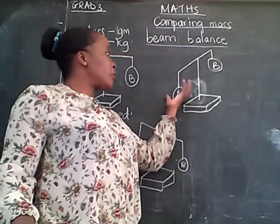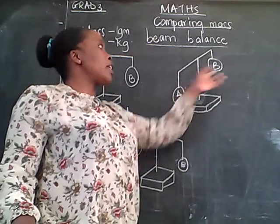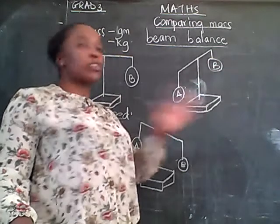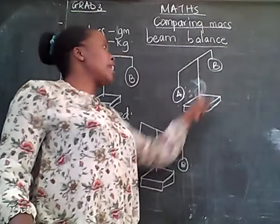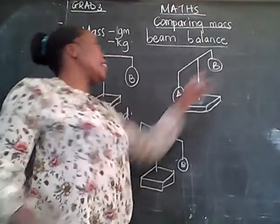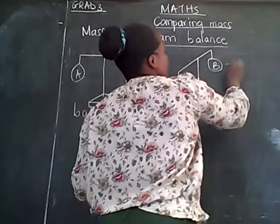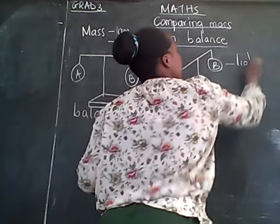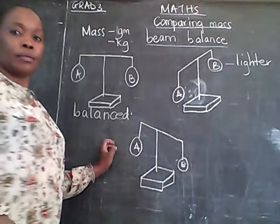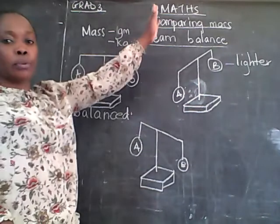Whatever stuff is put here is more than the stuff in B. This one has not balanced. A is heavier than B, or B is lighter. They can use different numbers, and that's why it has gone up - because it is lighter.